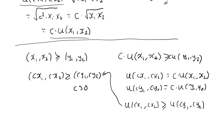So we have proved that if the x bundle is weakly preferred to the y bundle, then cx1, cx2 must be weakly preferred to cy1, cy2, which means that preferences are homothetic.